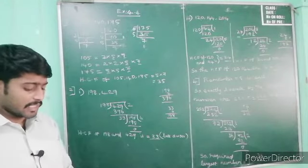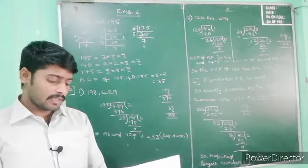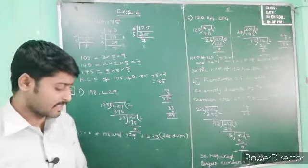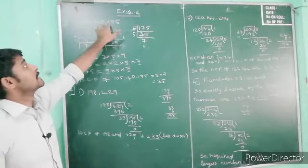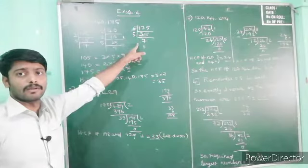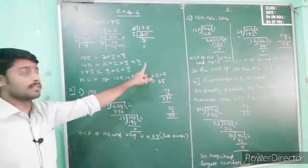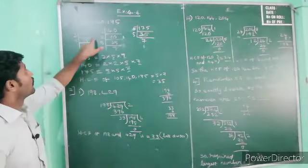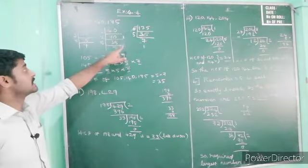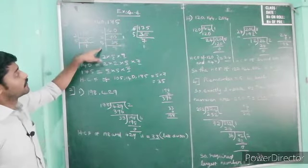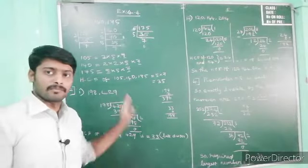First question: 105, 140, and 175 — this one we have to do by prime factorization method. Three numbers are given. Listen carefully — every number we have to find out the prime factorization separately. After that, we write the prime factors of each number. Finally, we find the HCF. For 105: three multiplied by five multiplied by seven. By looking only, for 140: two, two, two, five, seven — these are all the prime factors. For 175: five into five into seven.